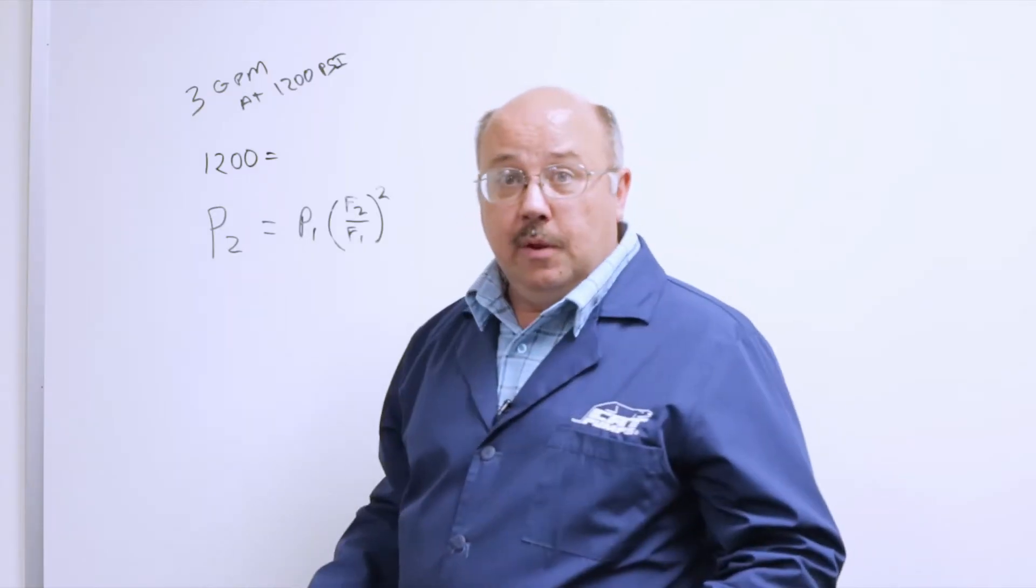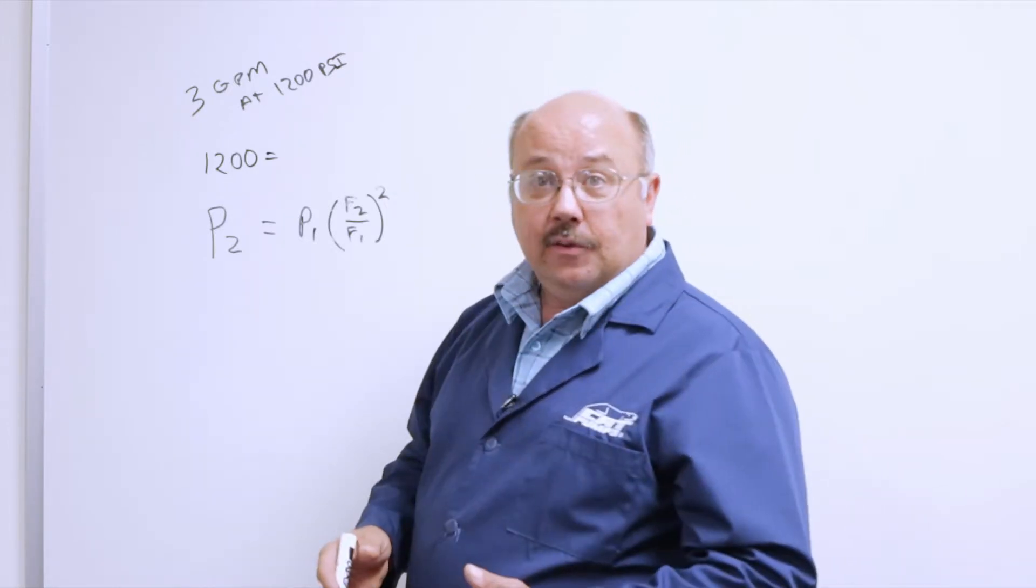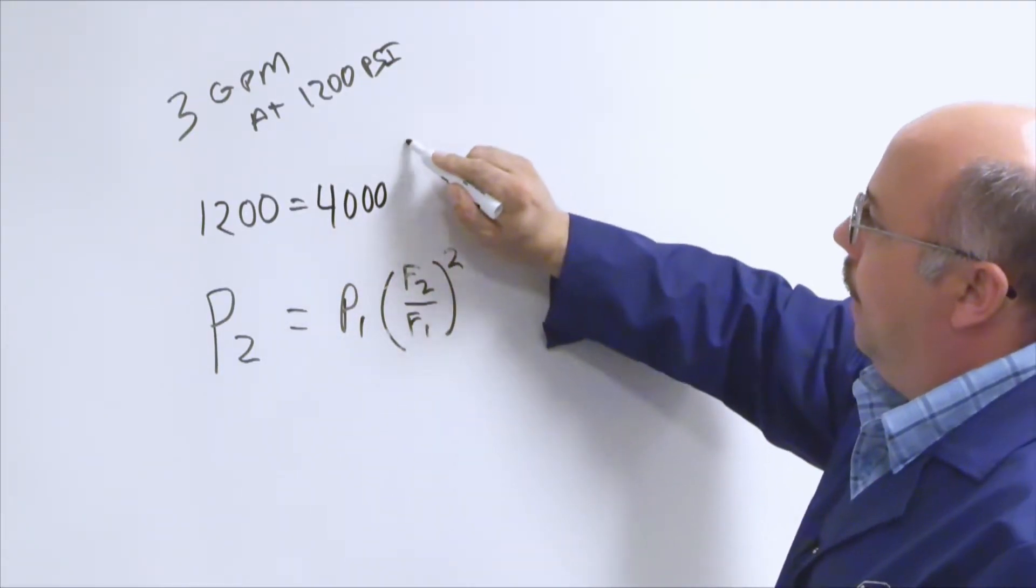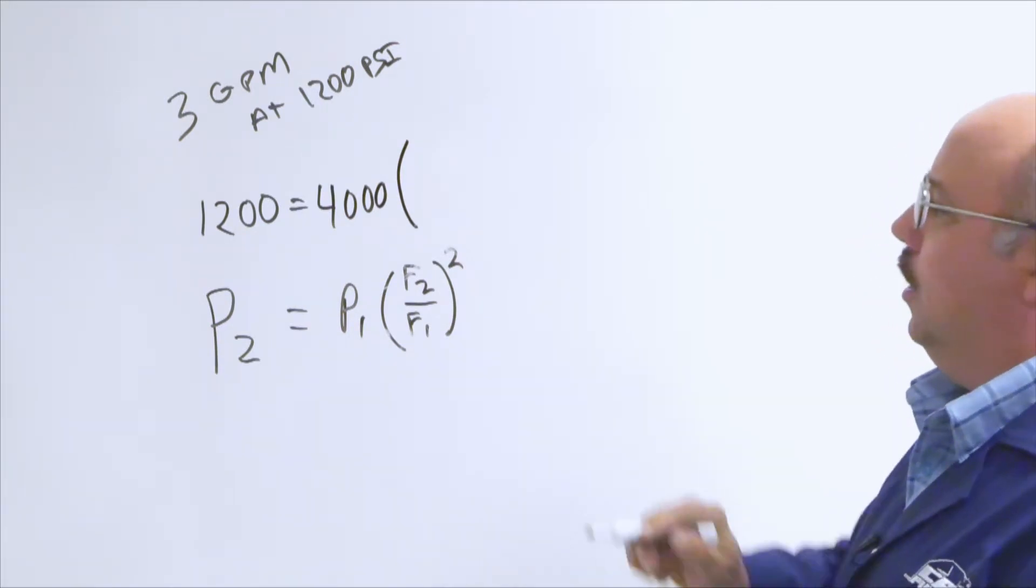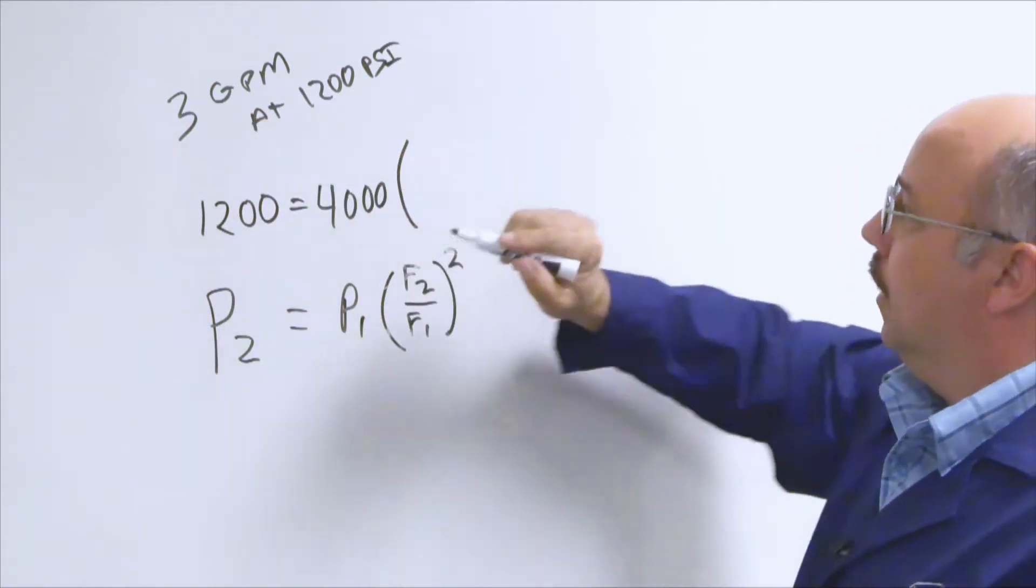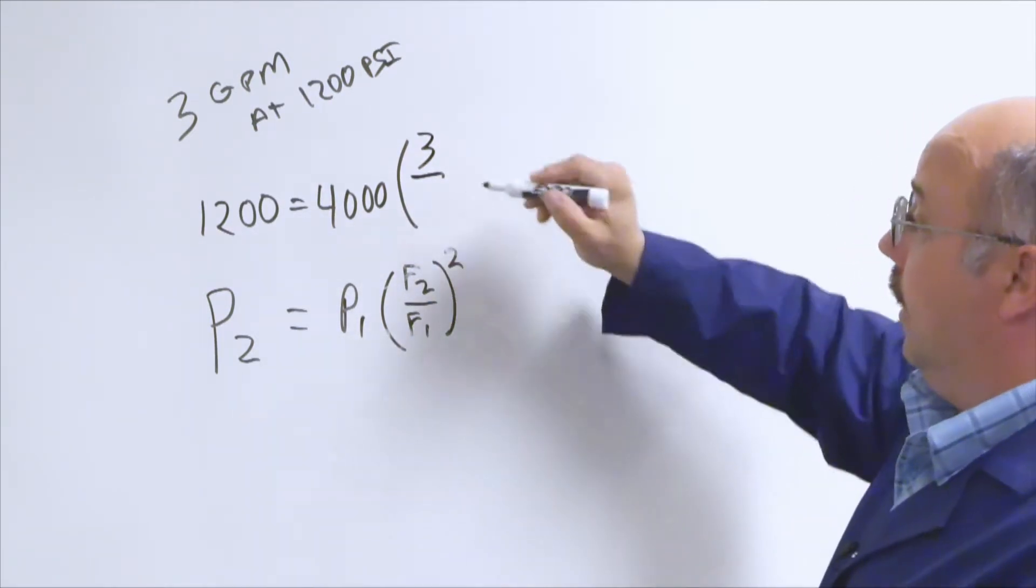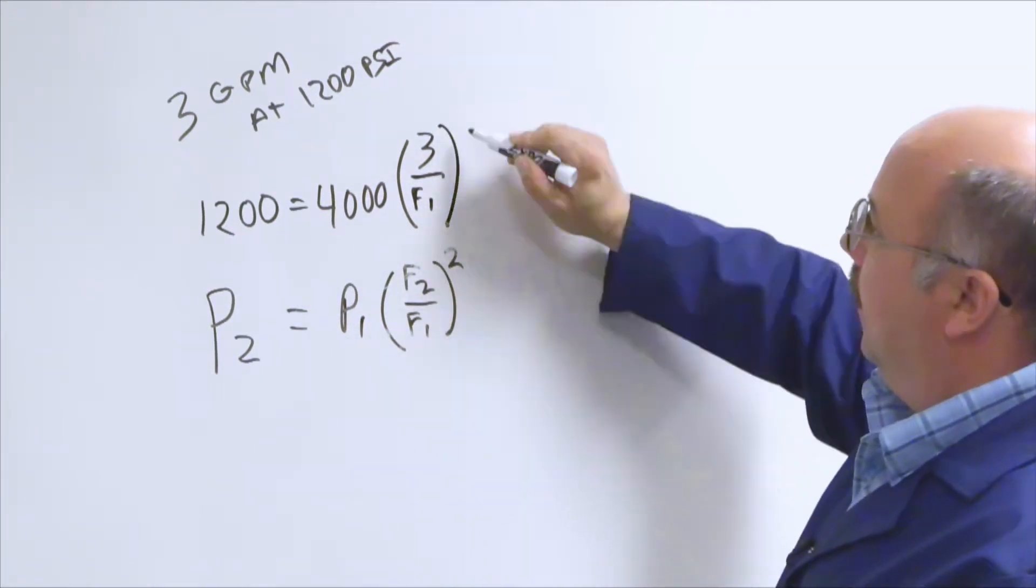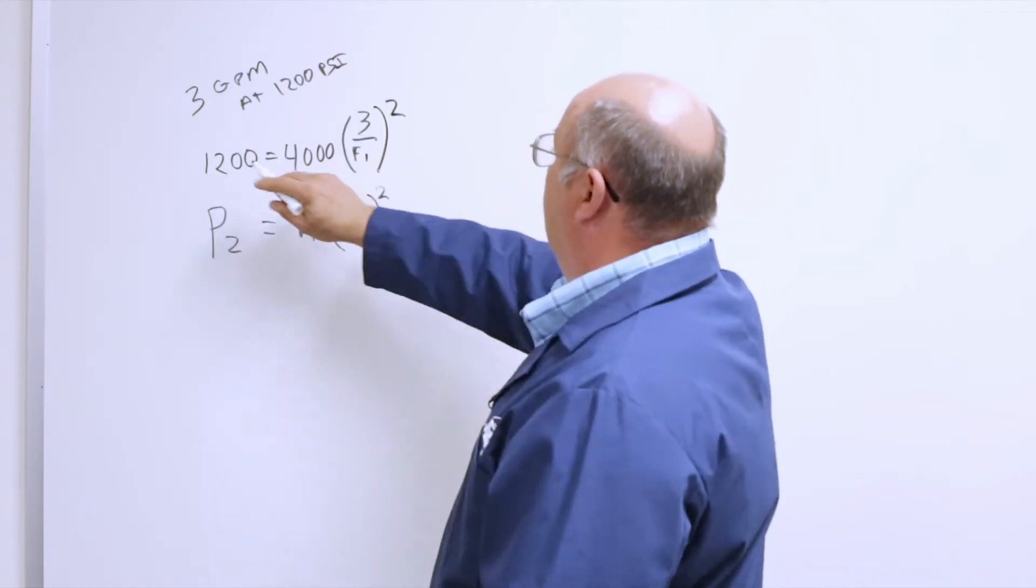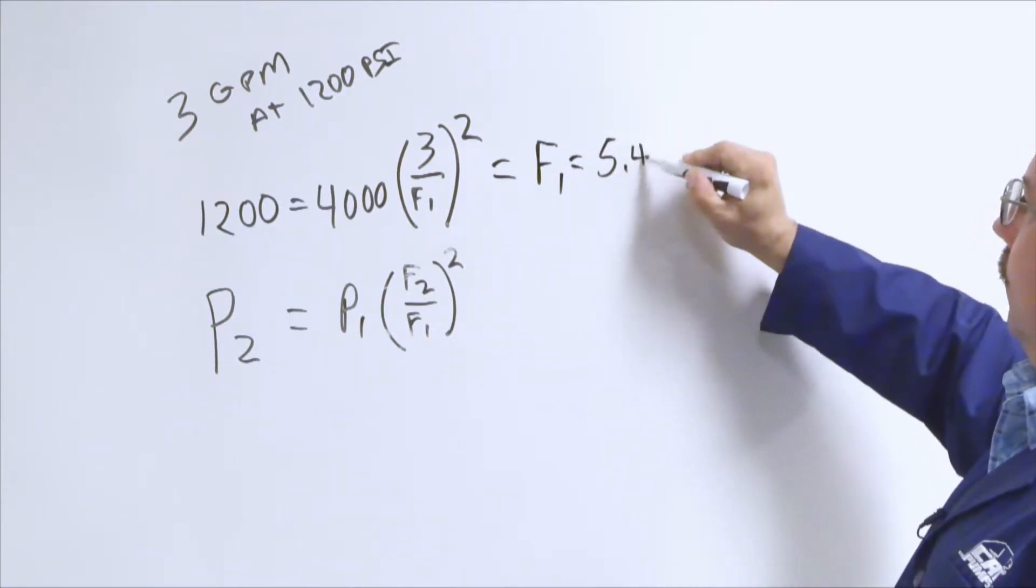So for this, P2 we're going to use is 1,200 because that's the pressure we want to end up with. So what do we use for P1? We're going to use the relationship that we know. We're going to put 4,000 here. Now, what goes for F2 and F1? Do we know what the flow is that relates to the 1,200 psi? Yes, we're going to run at 3. Do we know what flow relates at 4,000? No, we don't know that right now. So we're going to continue to call that F1, and then we're going to square this.